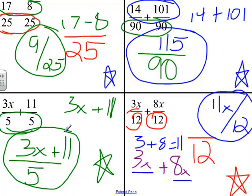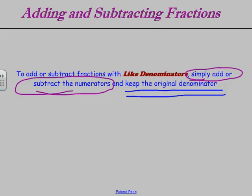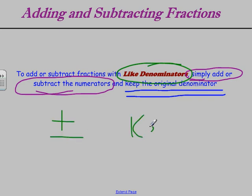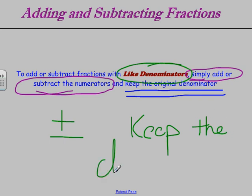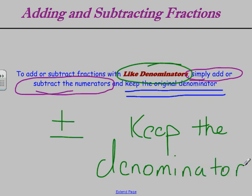Once again, when adding and subtracting fractions with like denominators, all you do is add or subtract the numerators and keep the same denominator. No matter what you have — whether you have monomials or numbers — you just add or subtract the numerators, keep the denominators, simplify the constants, combine like terms, and you will eventually arrive at your answer.